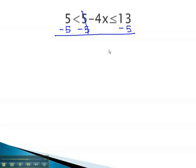As we do, on the left side, 5 minus 5 is 0. This does not mean the left side of the inequality disappears. We just write 0 is less than negative 4x, which is less than or equal to 8.